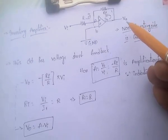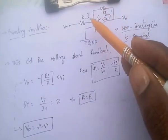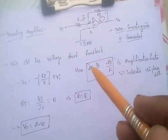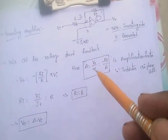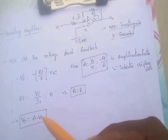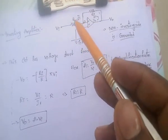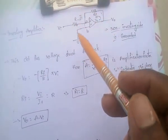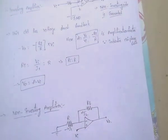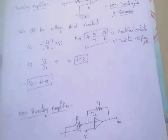The output V0 equals minus RF by R into input voltage. Here, minus RF by R is nothing but A. So if we replace minus RF by R with A, V0 equals A into Vi. Input resistance RI equals R only. This is the inverting amplifier, and minus indicates 180 degrees phase shift.